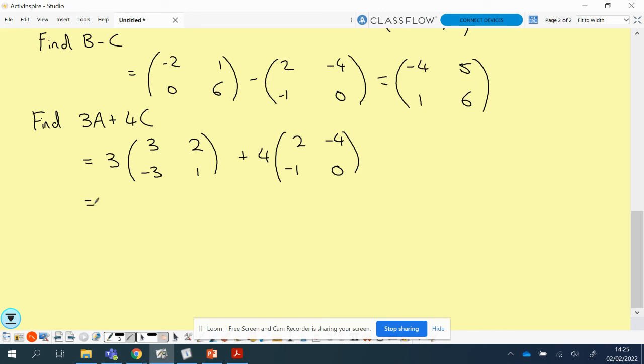So we just multiply every entry in this first part here by 3, so that's going to give me 9, 6, minus 9, and 3. And we're going to add 4 lots of this, multiply by 4 first, that's going to give me 8, minus 16, minus 4 and 0. Let's add our entries now. So 9 and 8 are 17, 6 and negative 16 is negative 10, minus 9 and negative 4 is minus 13, and 3 and 0 is 3. And that's my final answer there. So we just have to multiply each entry first before we could add them there. Any questions?